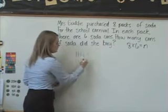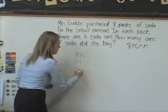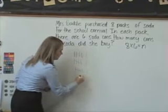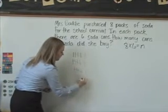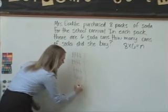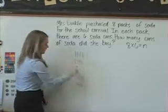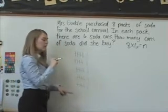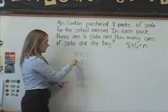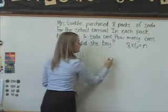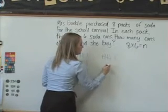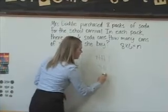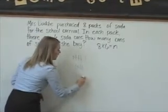We have five groups of six so far, and we need a total of eight groups of six — so five, six, seven, and eight groups.